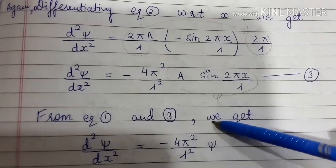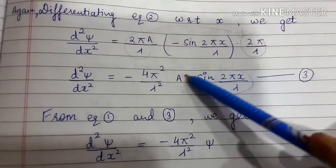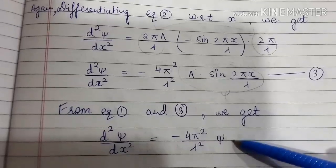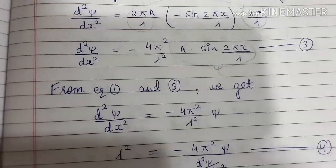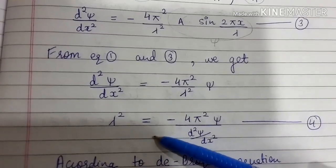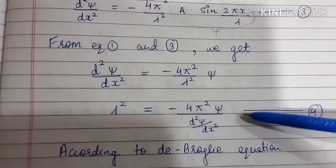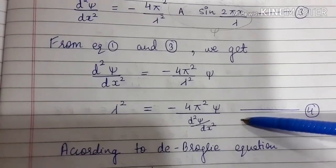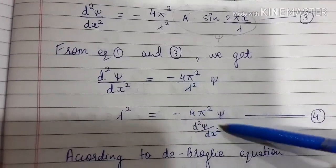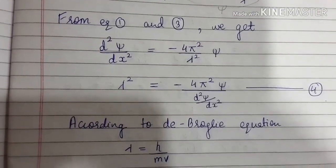From equations 1 and 3, we can combine them — the psi portion from equation 1 substitutes in, and rearranging, we can find the value of lambda squared. This portion moves to the left side and the remaining terms form the divide portion, giving us equation 4.